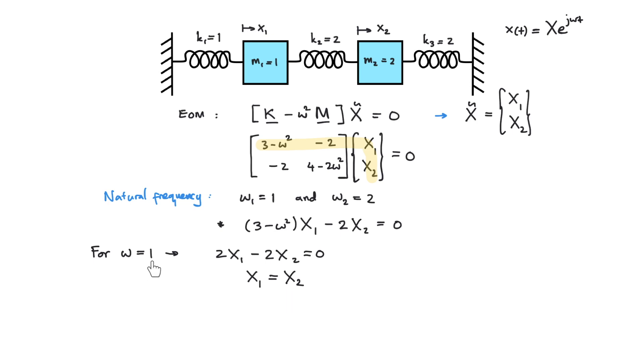What it means here is that for the first natural frequency, mass m1 and mass m2 will have the same magnitude of vibrations. If mass m1 is moving 1 cm in amplitude, m2 will also move in the same phase with 1 cm amplitude.